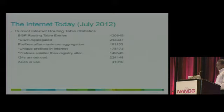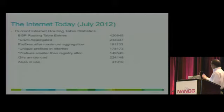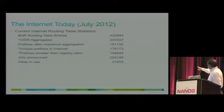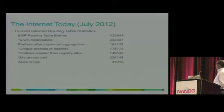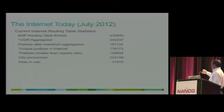The BGP table from a year ago was about 420,000 internet routing table entries. If you do CIDR aggregation based on CIDR address space, you can reduce it to 243,000. If aggregated using a maximum aggregation mechanism, it can go down to 181,000. So the current table can easily be aggregated to be more efficient — either 250,000 or 180,000 — but it was 420,000 last year, and this year it's around 450,000.